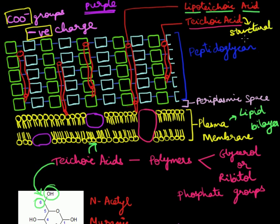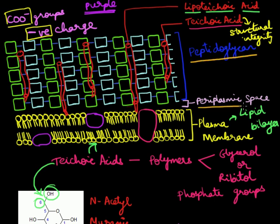To recap: a Gram positive cell wall has a simple structure. It has a thick peptidoglycan layer, an indistinct periplasmic space, and it secretes exoenzymes to compensate for the lack of proteins in its periplasmic space. It also has teichoic acids, which give a negative charge to the cell wall.